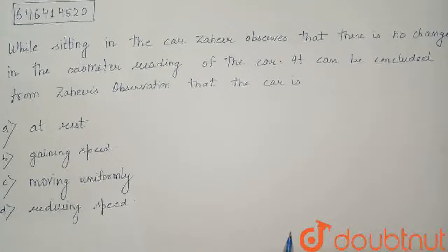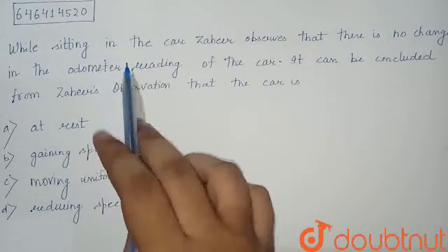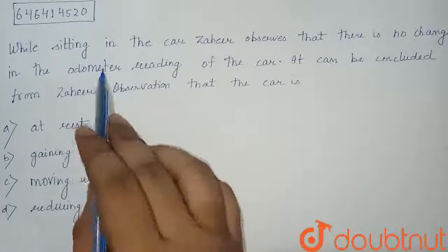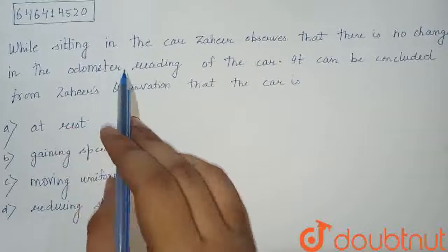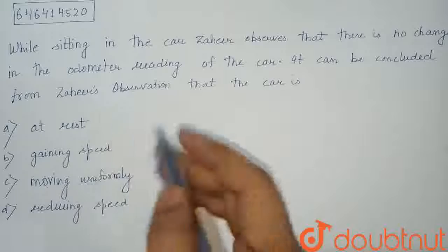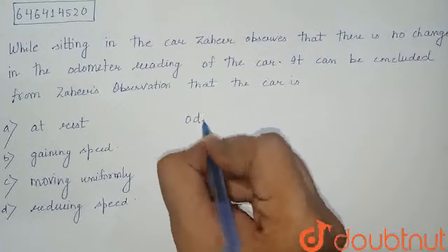So first of all, we can see this question. Jahir's car — there is no change in his observation. So first of all, we can see what is the function of the odometer.